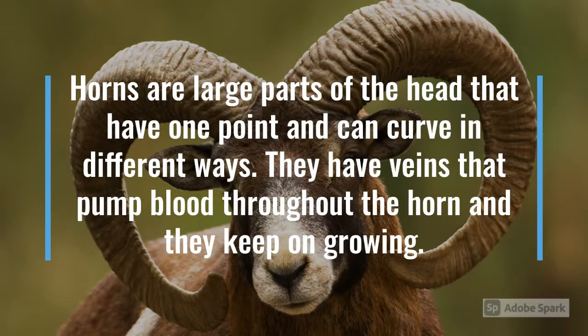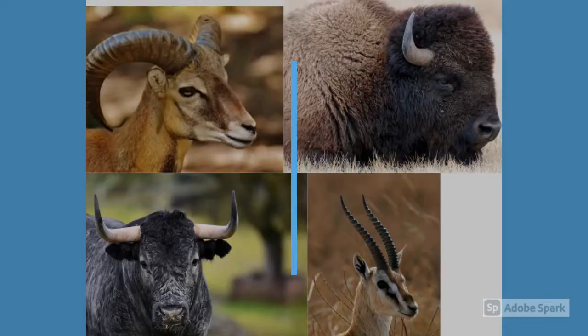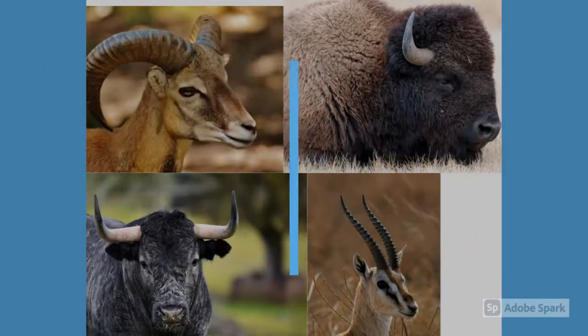Horns are large parts of the head that have one point and can curve in different ways. They have veins that pump blood throughout the horn and they keep on growing. Animals with horns include American bison, water buffalo, gazelle, bighorn sheep, and more.